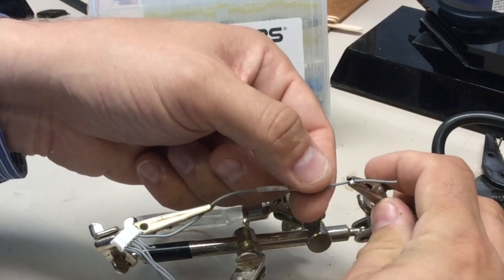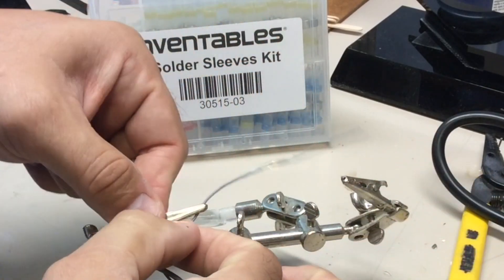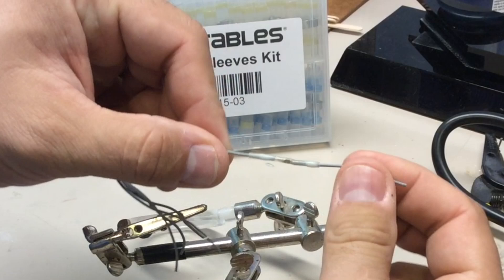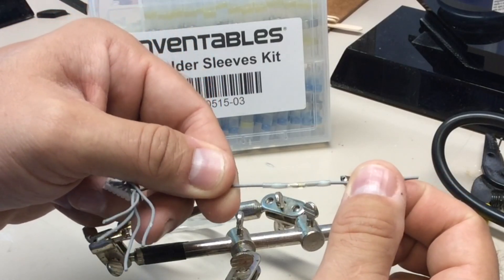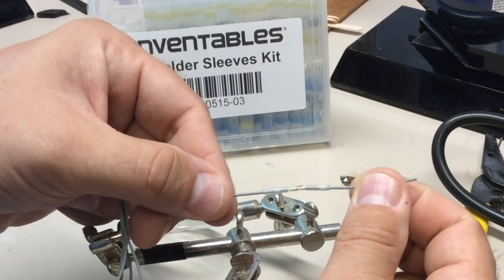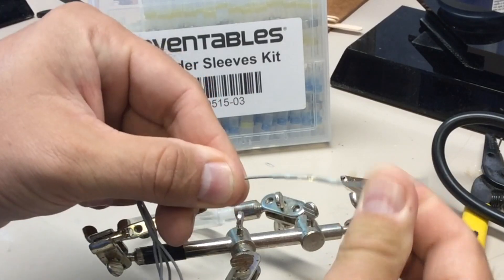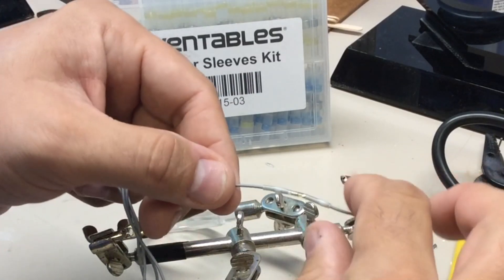Now it's probably cooled off enough. So I'll take this out and there we have it. A fixed solder joint without having to get out my soldering iron or cutting a separate piece of shrink tubing. It's strong, ready to go and flexible.